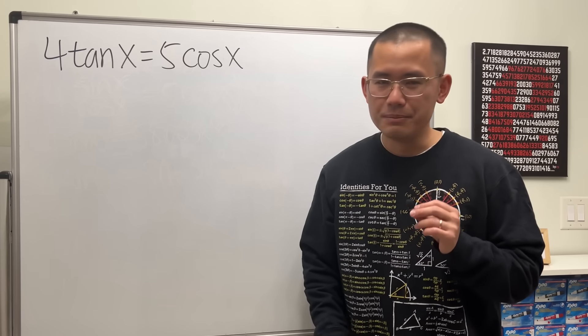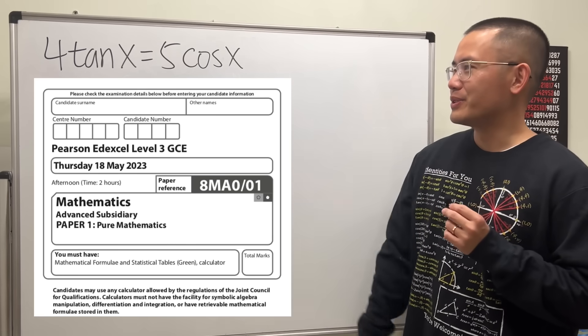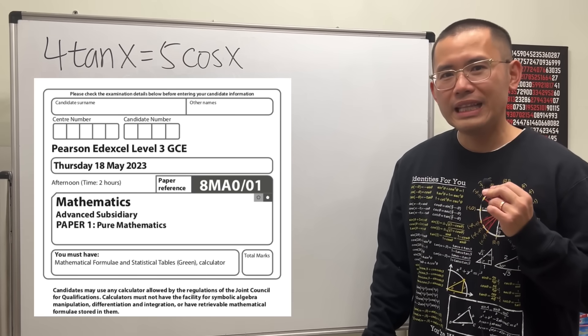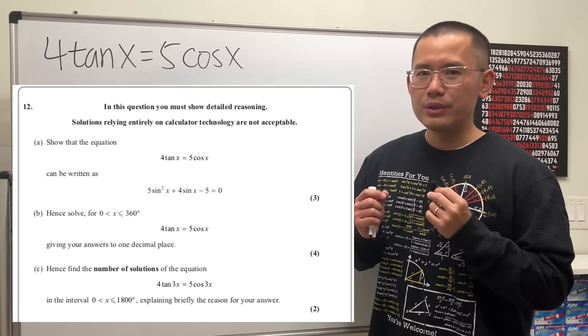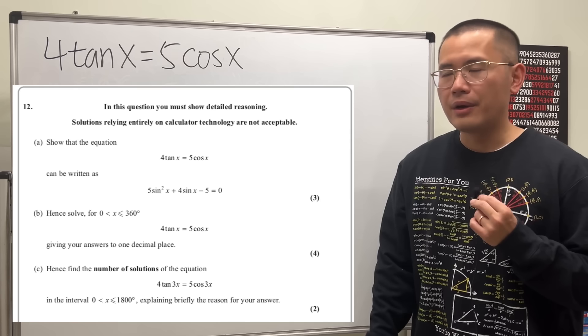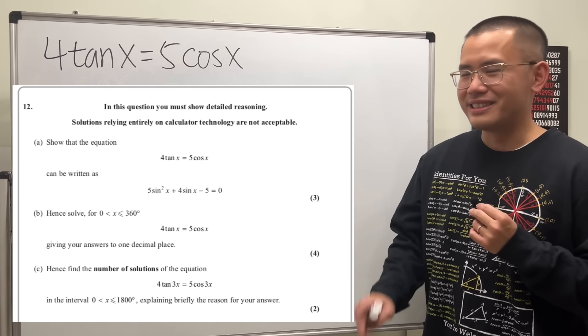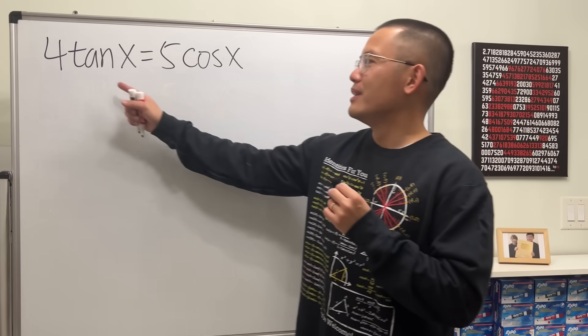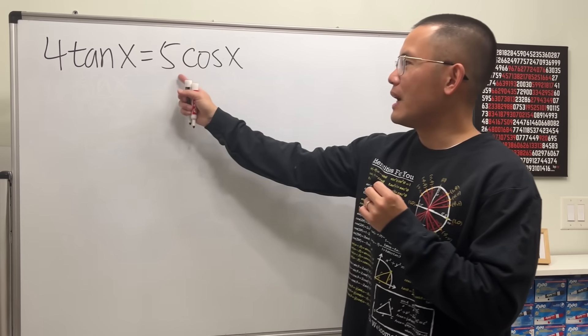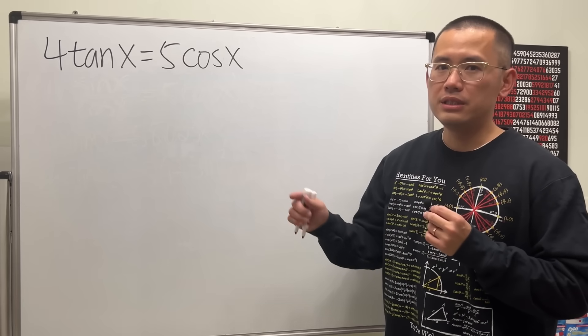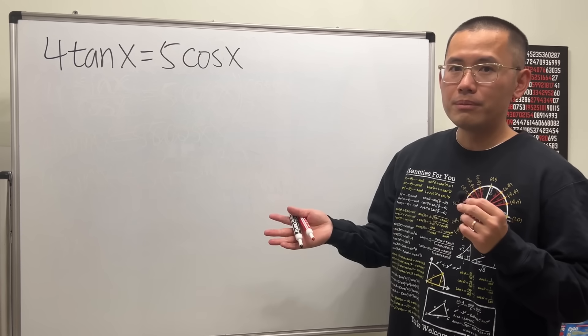I love trig equations most of the time, and I saw this question from the 2023 A-level math exam. So let's see how the A-level math exam asks about a trig equation. Notice that this question has three parts. First, we have 4 tangent x equals 5 cosine x. We are going to turn this into the given form, an equation in terms of sine.